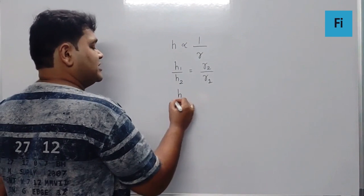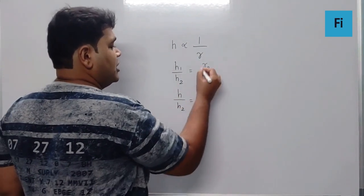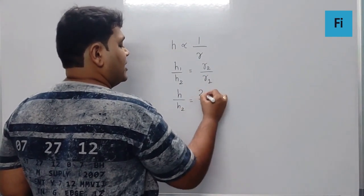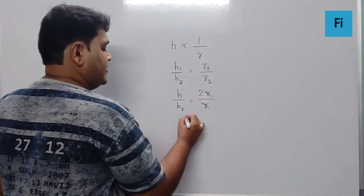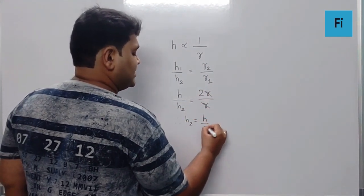So in that scenario, h₁ is h, h₂ is unknown, r₁ is r, r₂ is 2r. That gives you the value of h₂ as h by 2.